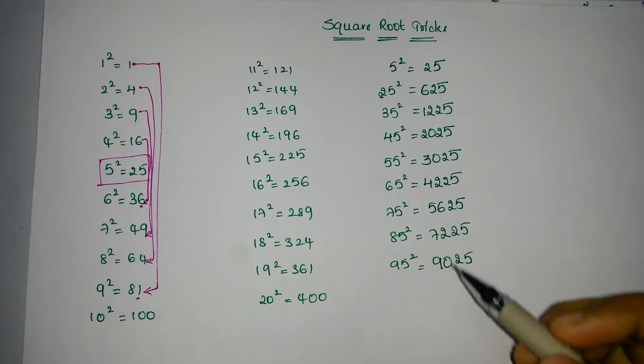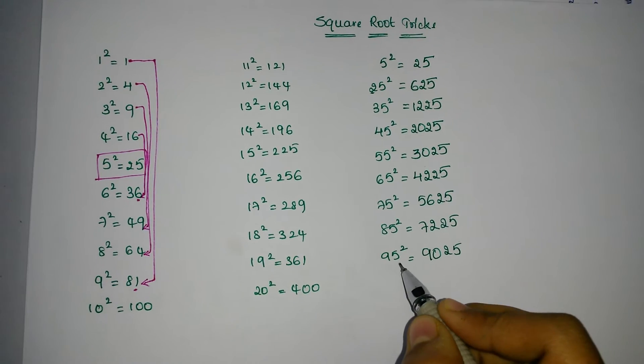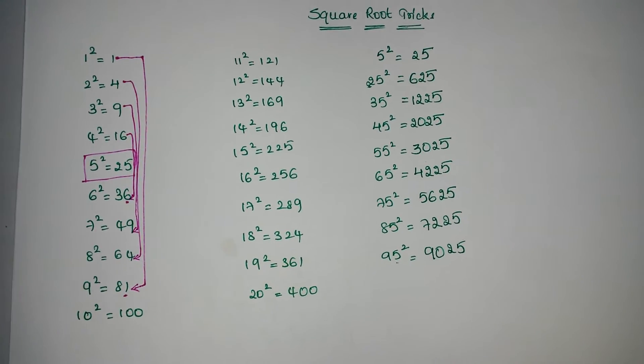This is a simple way to find the squares when there is 5 in the unit's place.